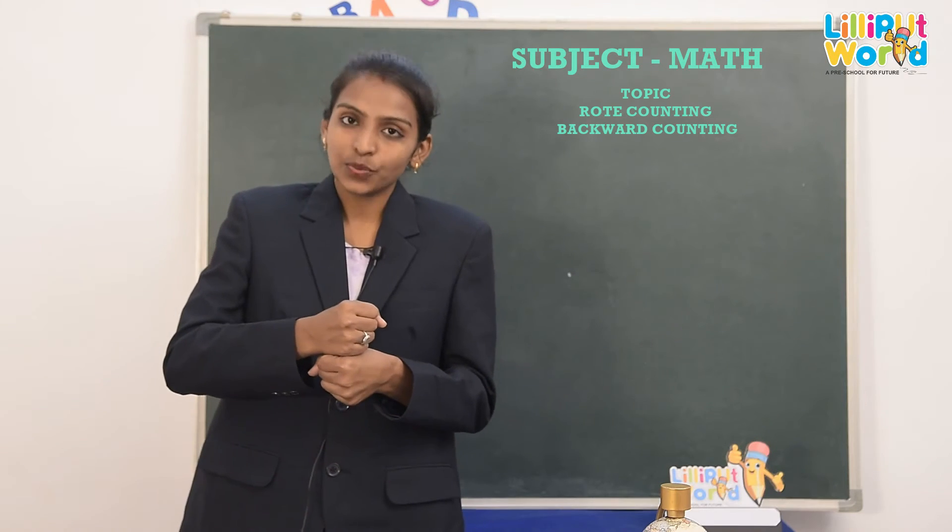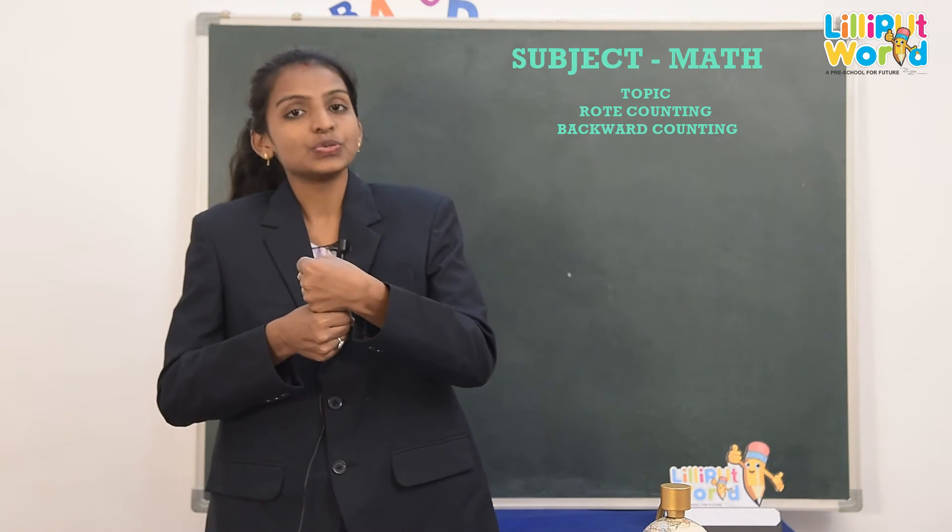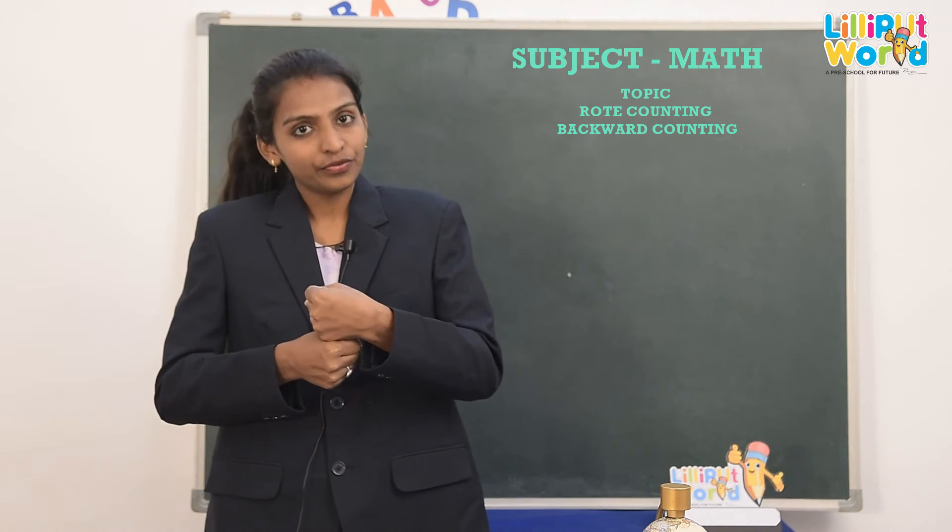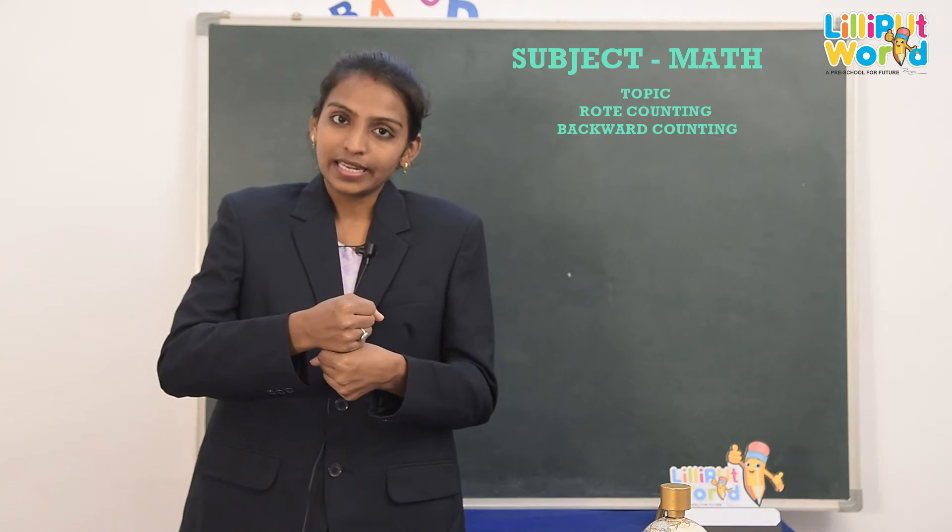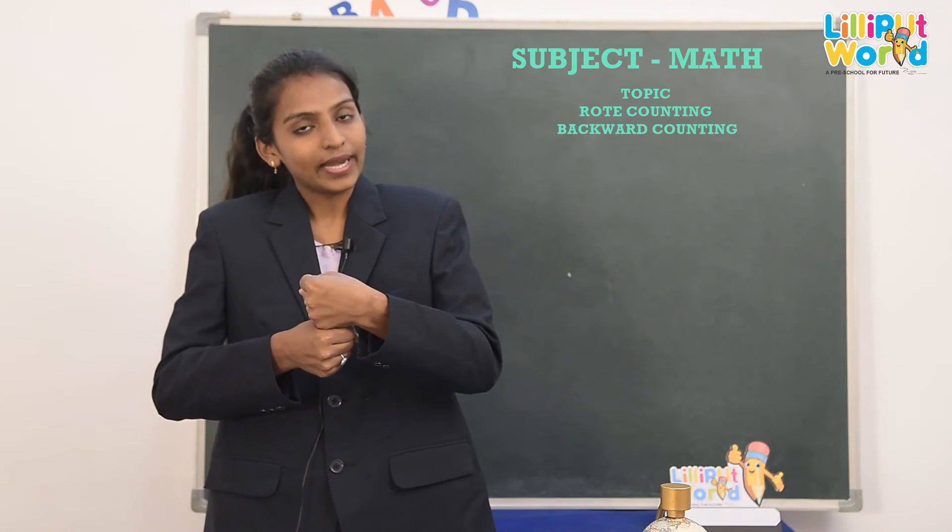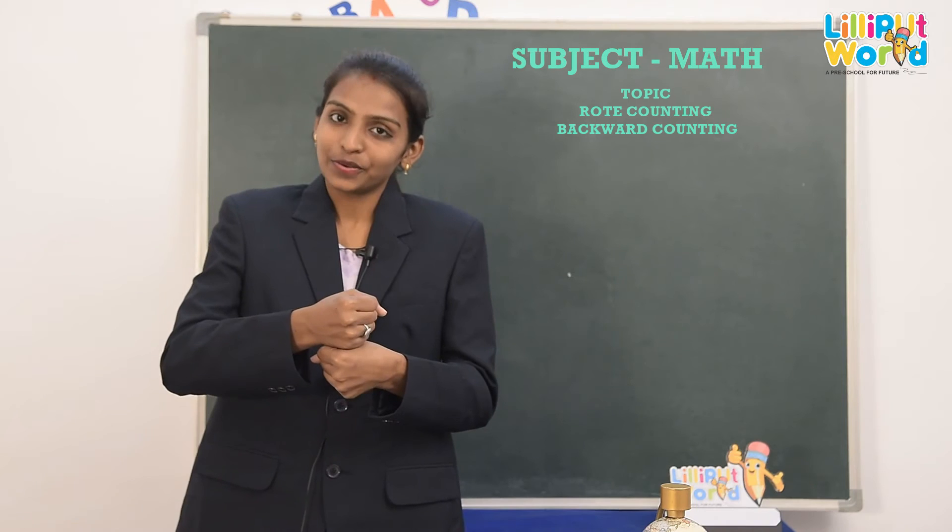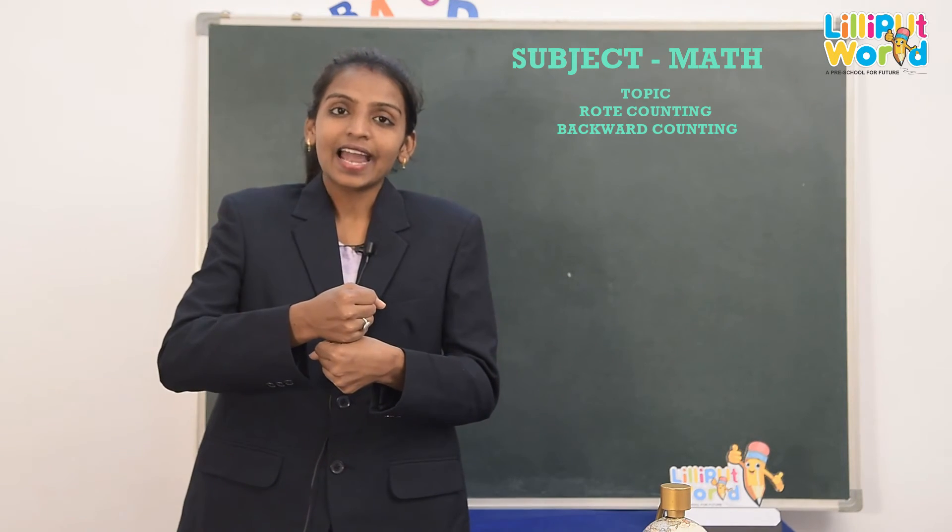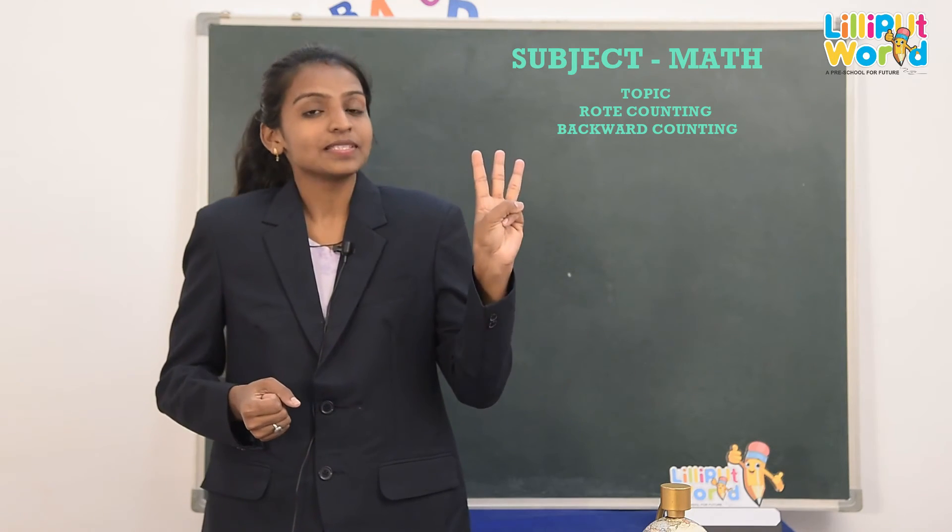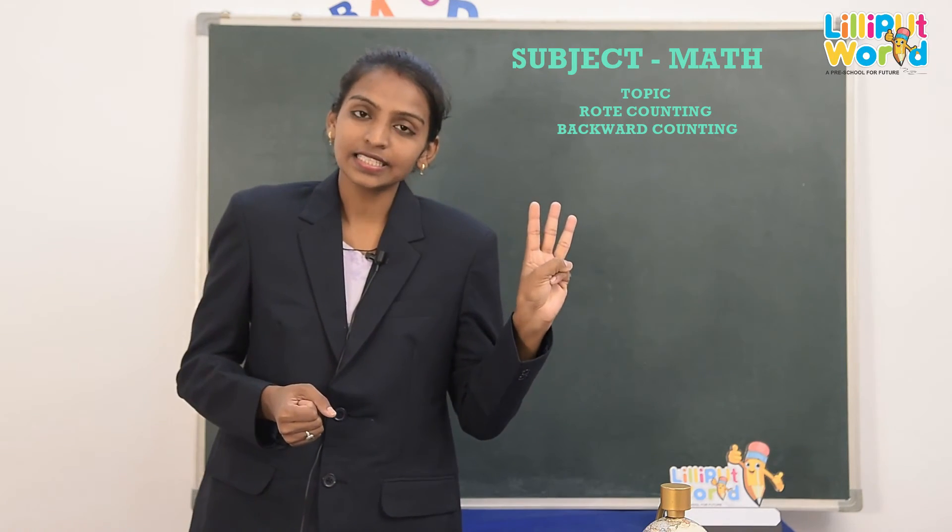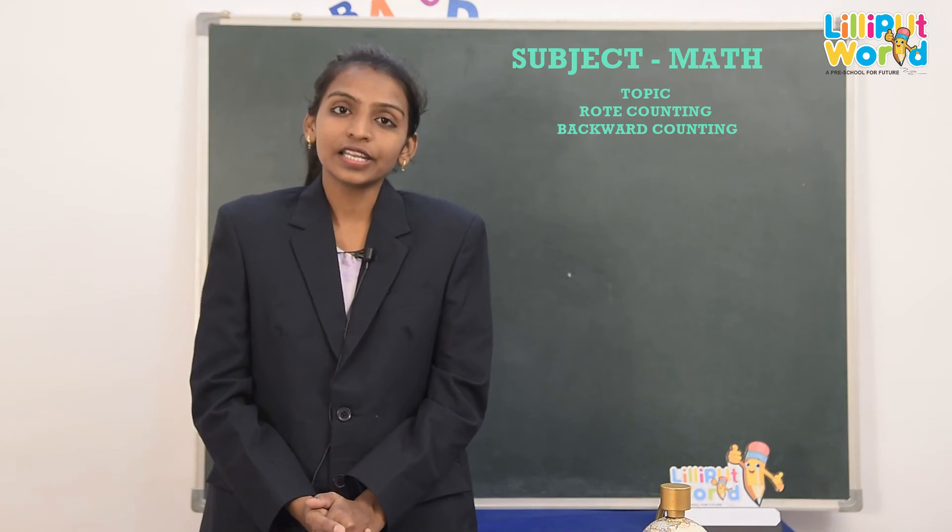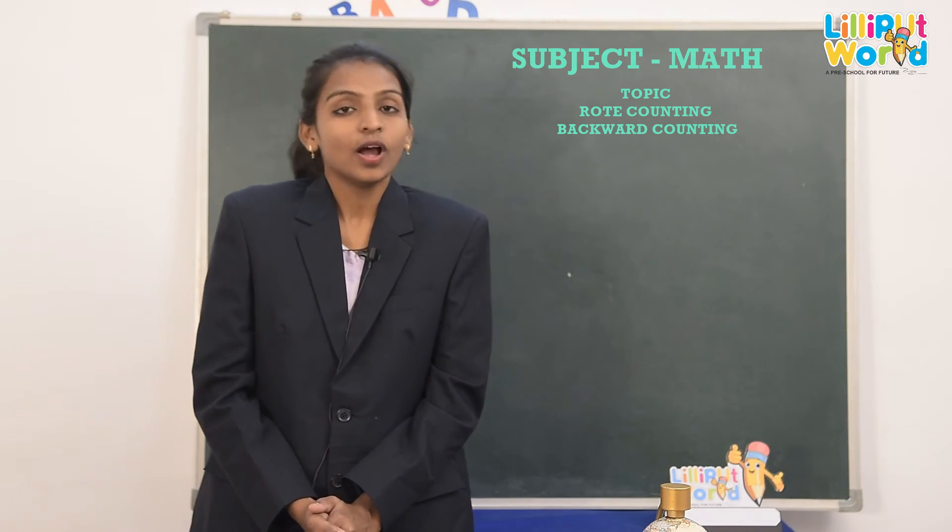Now, 20 and 1, 21. 20 and 2, 22. 20 and 3, 23. 20 and 4, 24. 20 and 5, 25. 20 and 6, 26. 20 and 7, 27. 20 and 8, 28. 20 and 9, 29. 3 times 10 means 30. Now, you have to do practice of 1 to 30 rote counting with your mama and dad, okay?